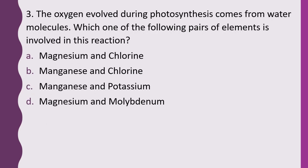Question 3. The oxygen evolved during photosynthesis comes from water molecules. Which one of the following pair of elements is involved in the reaction? Options: Magnesium and chlorine, manganese and chlorine, magnesium and potassium, magnesium and molybdenum. The correct answer is option B — manganese and chlorine are involved.